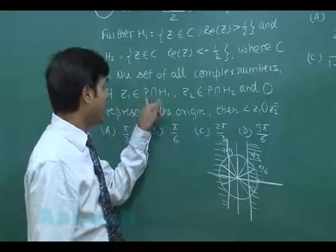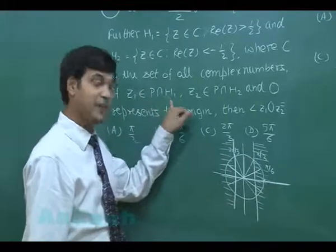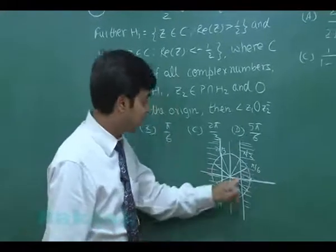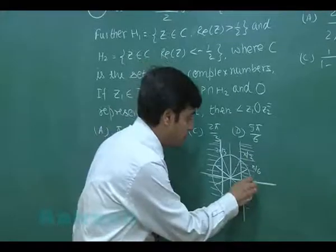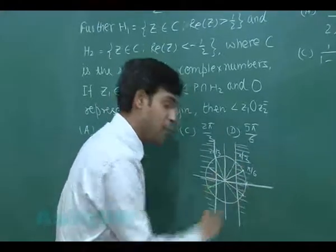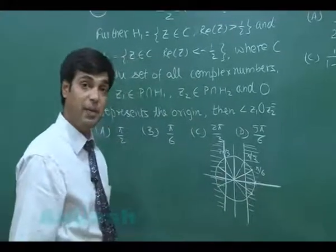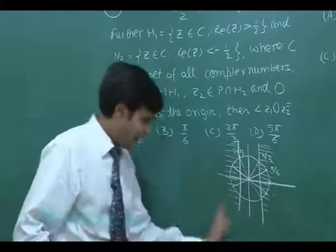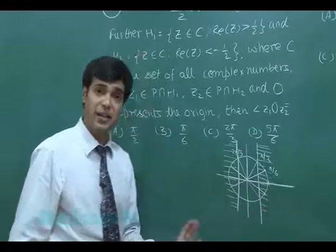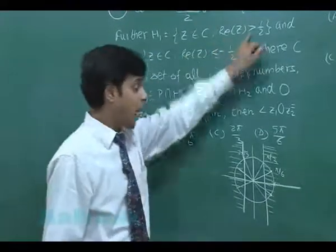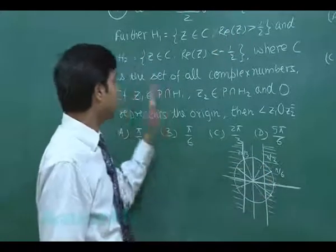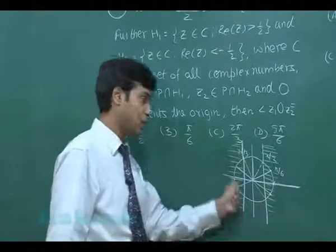z1 is an element from P intersection H1. From this side it can be 1 with the angle pi by 6, with the angle minus pi by 6, or the angle 11 pi by 6. z1 is greater than half, means this point is not taken.